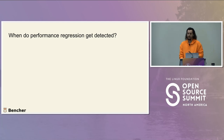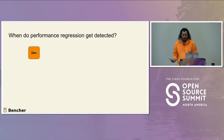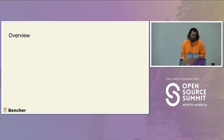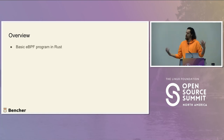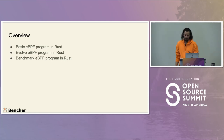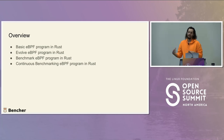Usually, performance regressions — if you're looking for them — can get detected in development. Most folks don't actually have anything to try and catch them in CI, like they do for feature regressions. That means they tend to get caught in production when things are on fire. An overview of where we're going: we'll go over a basic eBPF program written in Rust, evolve that program, benchmark it, and then add continuous benchmarking.